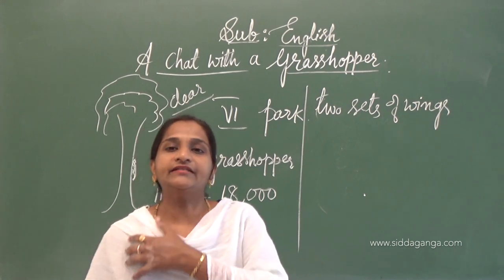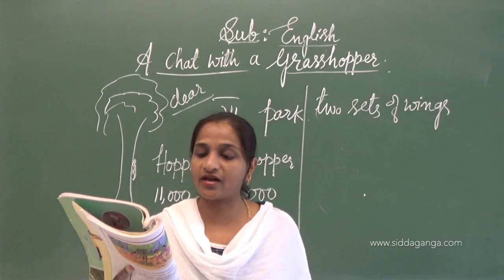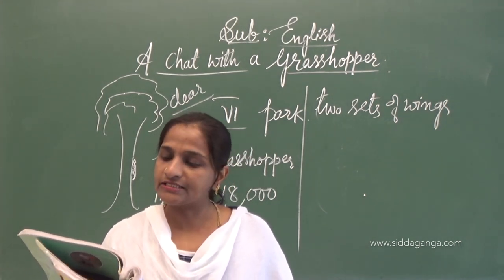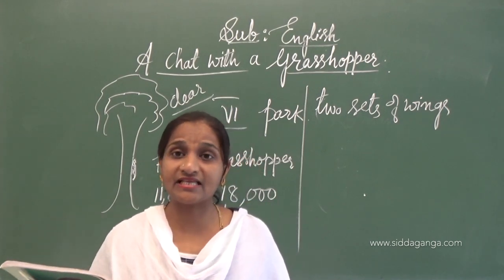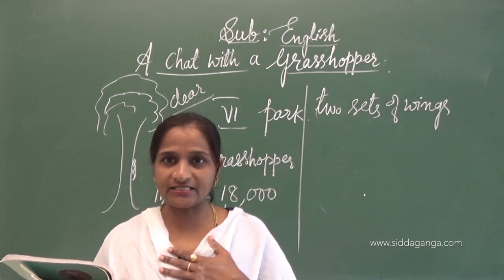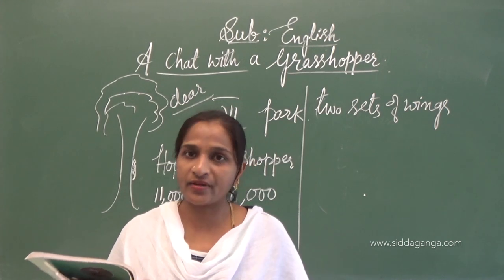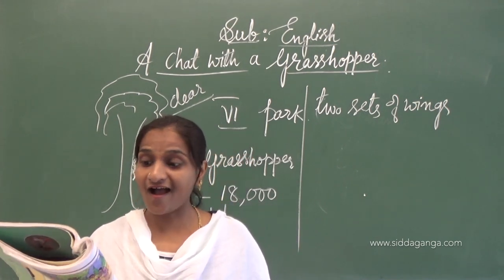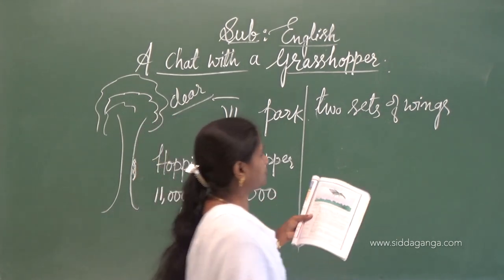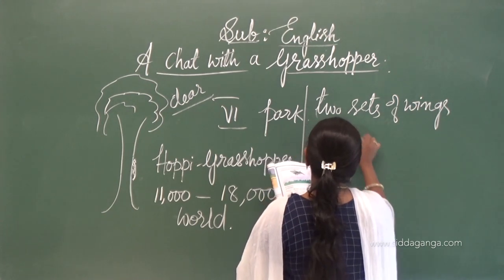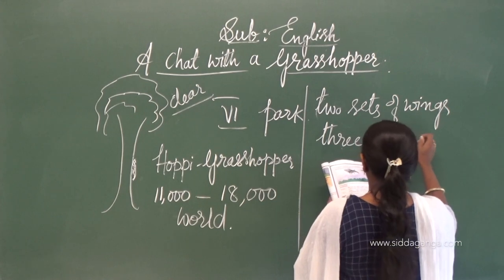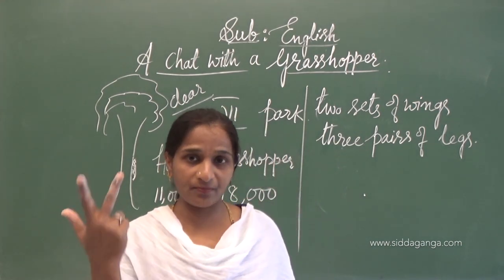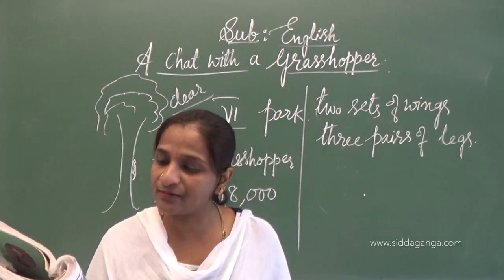Ramya is asking the question: We have two legs to walk, jump and run around. How many legs do you have? Ramya is asking the grasshopper that we have two legs to walk, jump and run. How many legs do you have? Hoppy replies: I have three pairs of strong legs. I can jump and walk like you. Grasshopper has three pairs of strong legs.